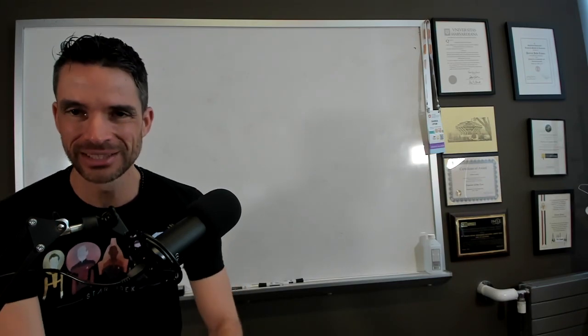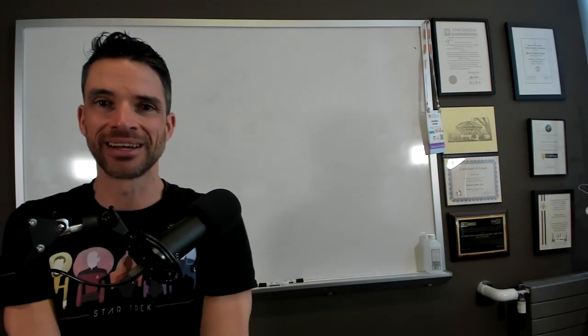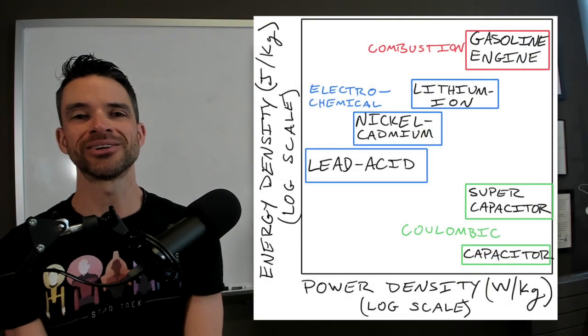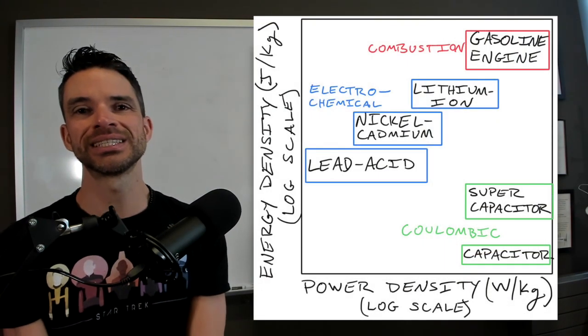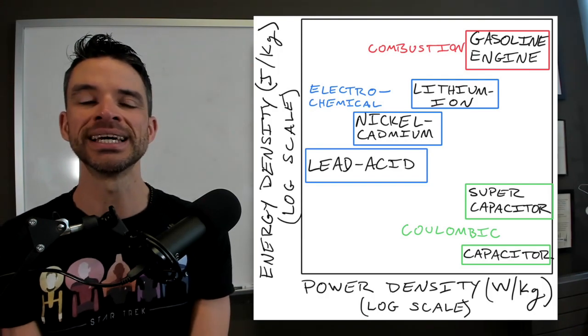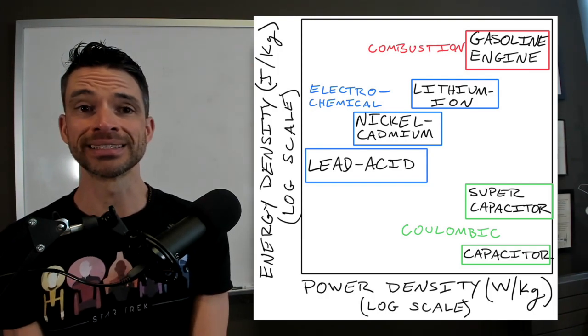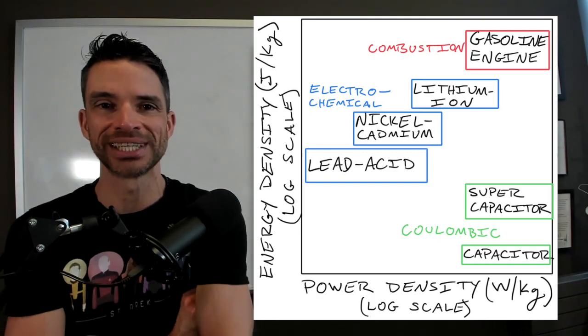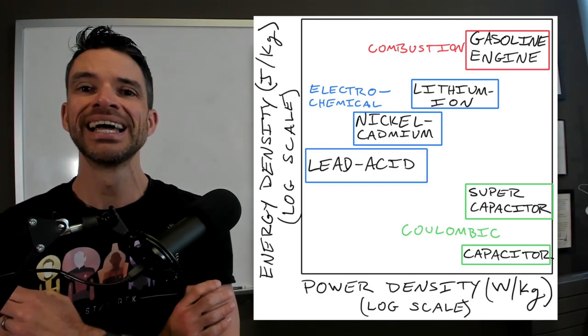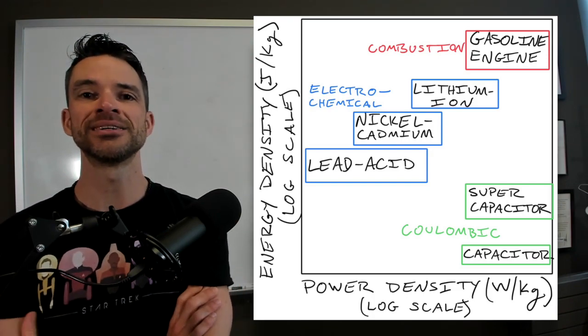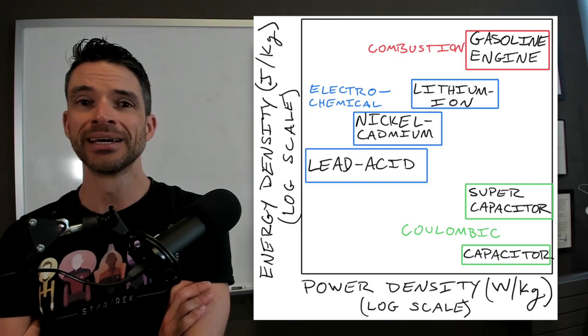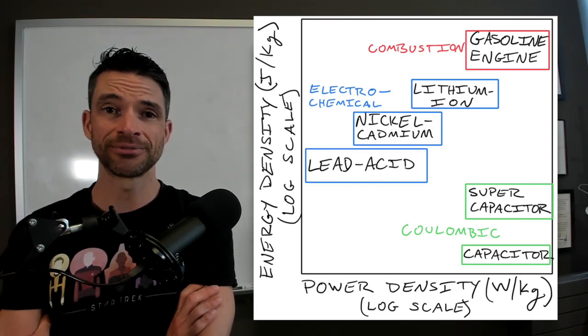And what you're trying to do in this type of technology is to maximize your power density and your energy density. So the energy density is the amount of energy that a solid block of potential energy containing stuff contains. And you want to co-optimize it with something called the power density.